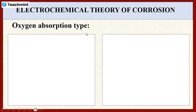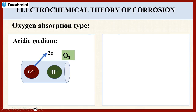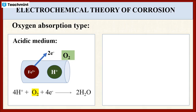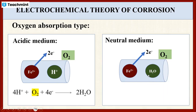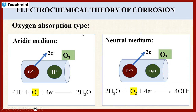The next type is oxygen absorption type. Here also we can observe two types of reaction: one in the acidic medium and another in the neutral medium. In the acidic medium, the H⁺ ions present in the corrosive medium absorb oxygen along with electrons from the anodic region and the removal of water molecule takes place. In the neutral medium, the water molecules present in the corrosive medium absorb oxygen along with the electrons and the formation of OH⁻ ions takes place. In both these cases, absorption of oxygen takes place. Hence, the name is oxygen absorption type.